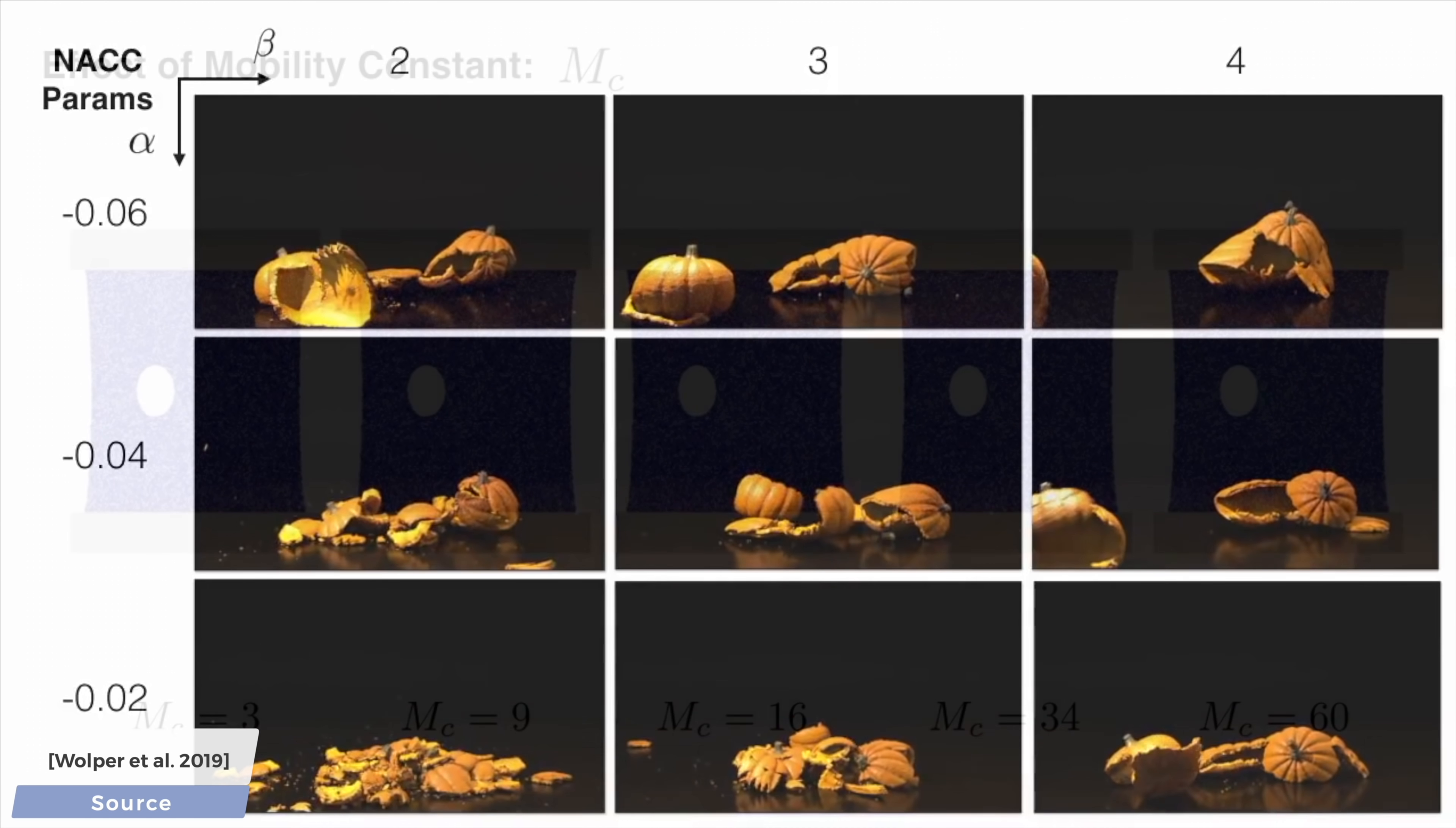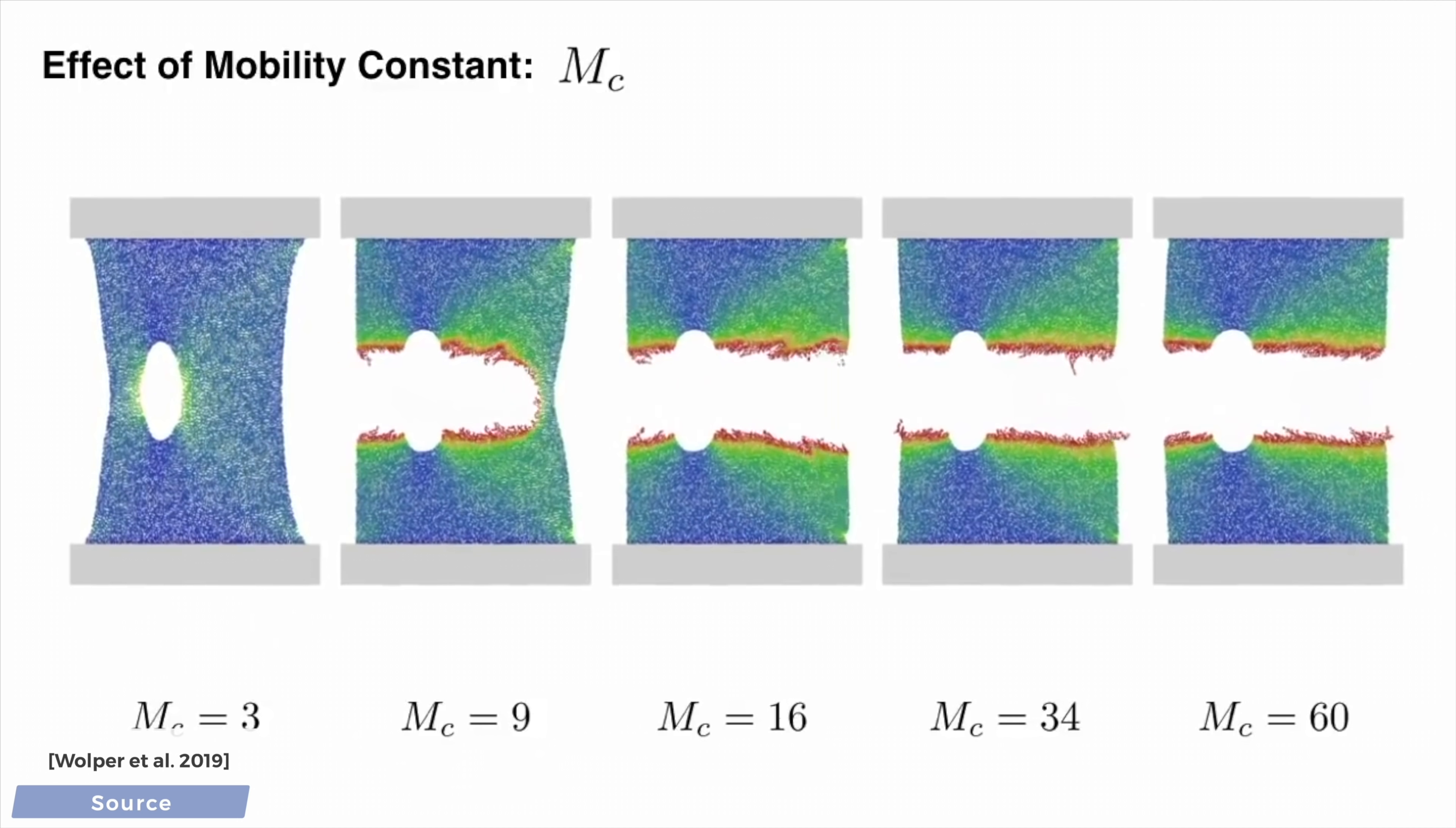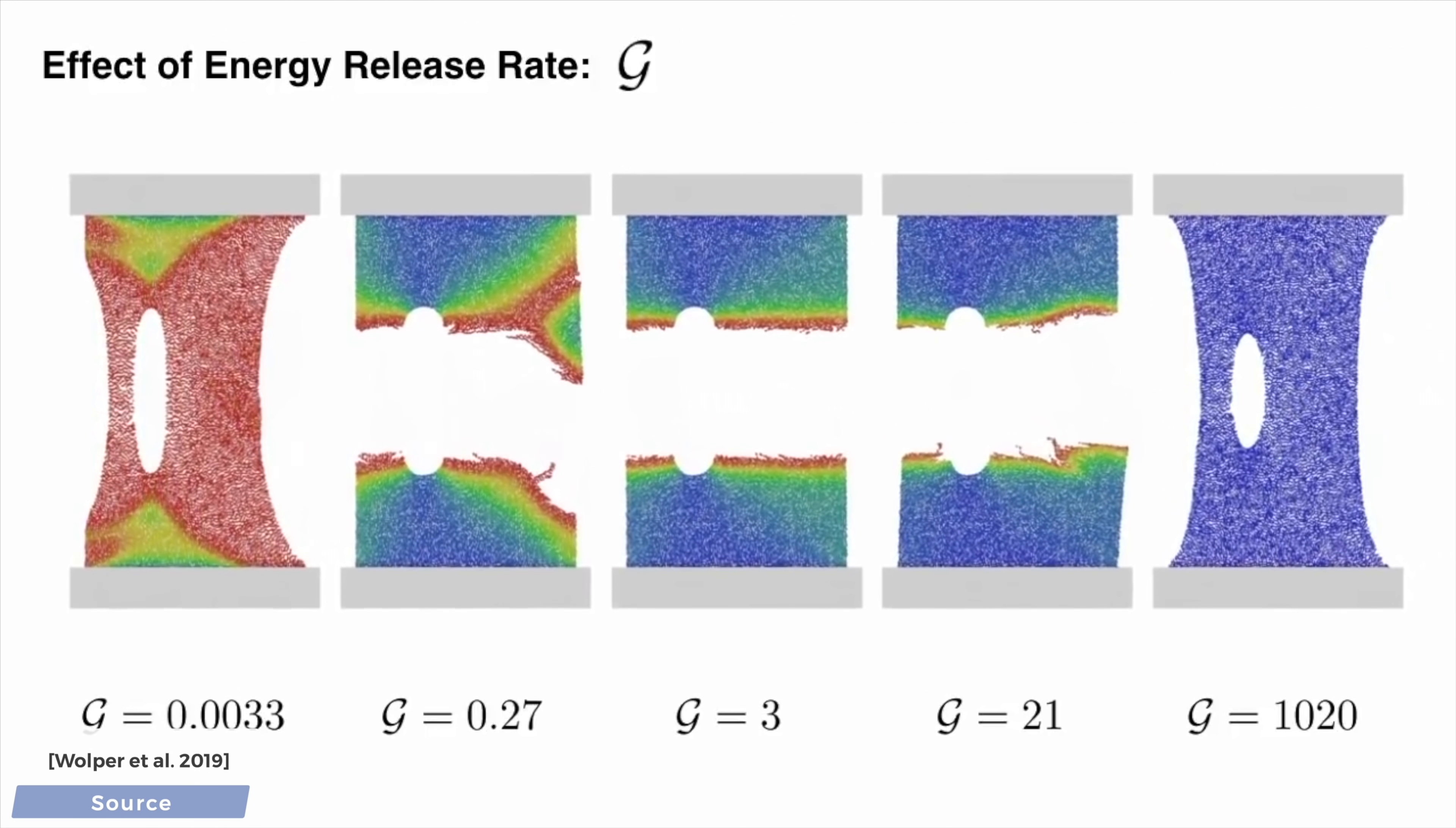We can even control the way the cracks form with the mc parameter, which is the speed of crack propagation, and g is the energy release, which, as we look to the right, increases the object's resistance to damage.